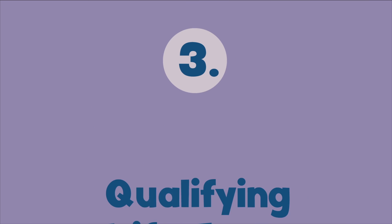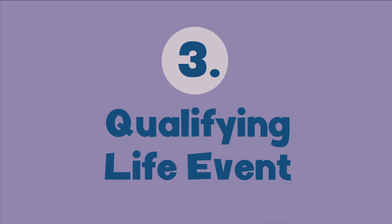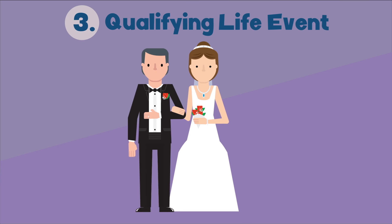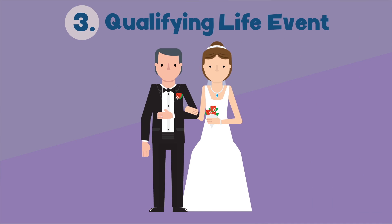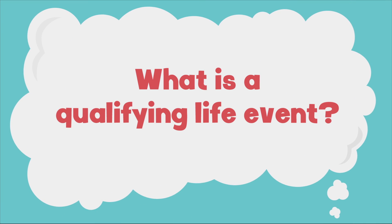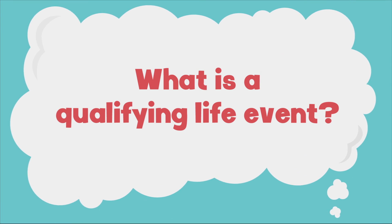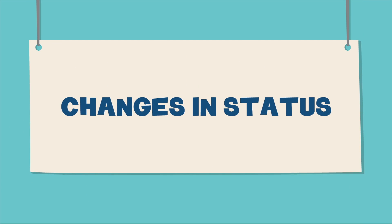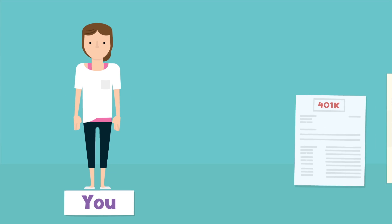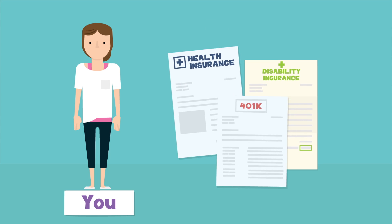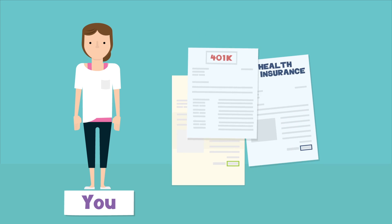Or when you have what is called a qualifying life event, like marriage or the birth of a child. Certain changes in your personal life qualify as an official change in status according to the IRS, which means that you can modify your benefit selections between open enrollment periods.